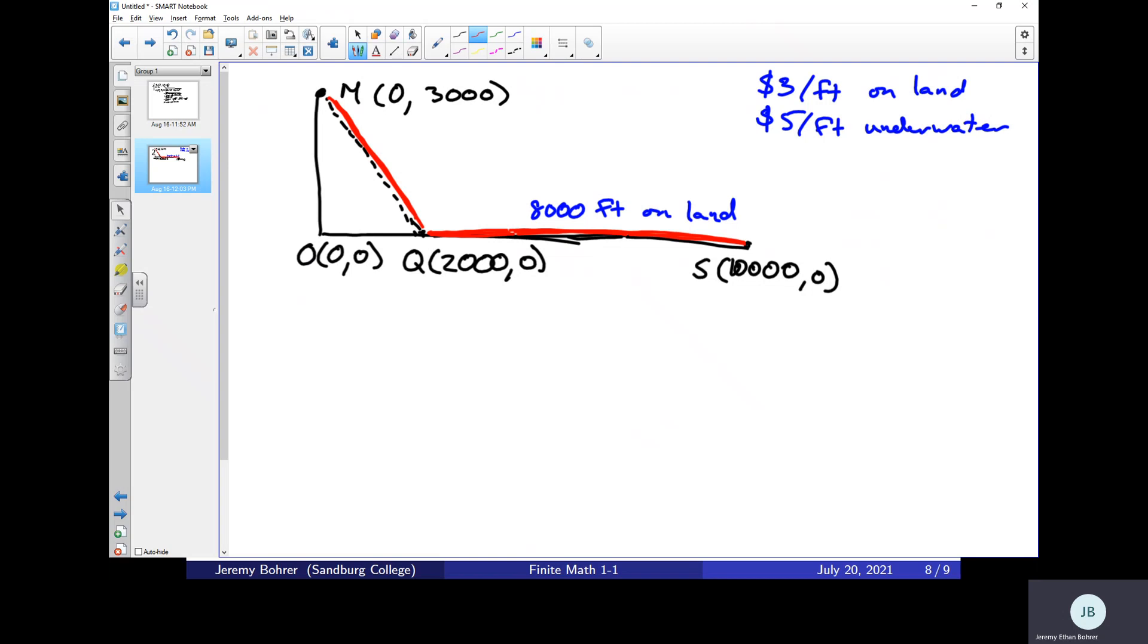And we don't know quite how far that is, but we can figure that out using the distance formula again. So using the distance formula, we've got two points and we want to find the distance between them. We're going to make M our point 1, so this is x1 and y1. And Q is our point 2, so this is x2 and y2.